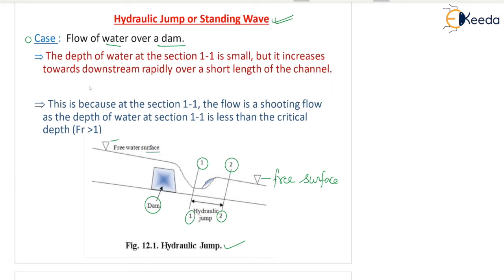As you can see in the figure, the depth of water at section 1 is small. Depth of water, also known as depth of flow, increases towards the downstream rapidly over a short length of the channel. Downstream is direction 1 to 2, so section 2 is downstream and section 1 is upstream.